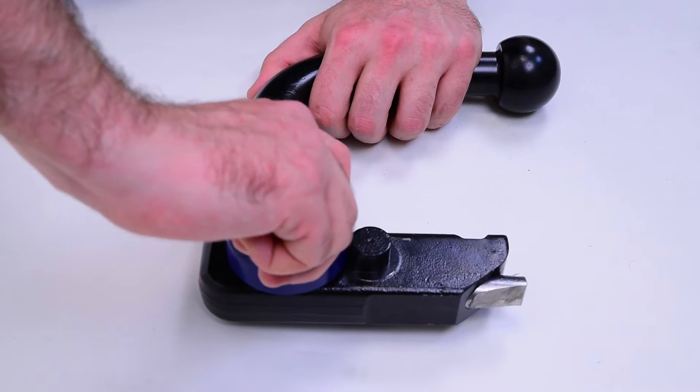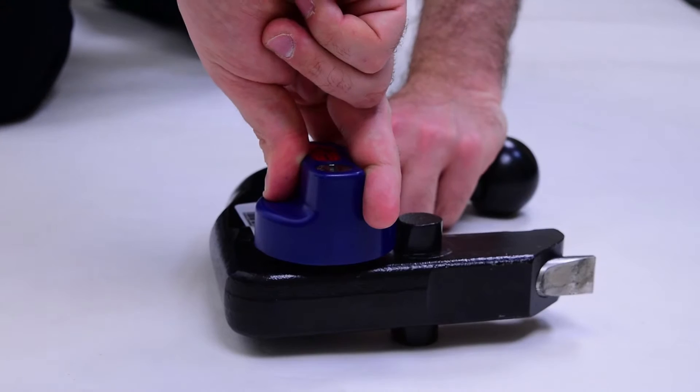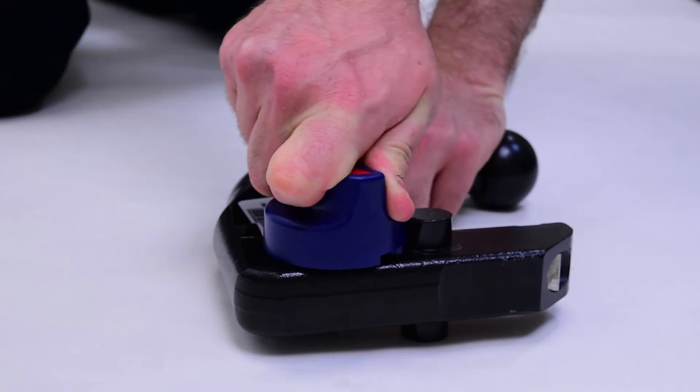If you can only turn it 90 degrees clockwise, then it probably hasn't been pushed in far enough. You need to push it all the way down before it will allow you to turn it.